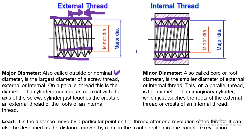There are other terms such as single thread, double thread, and multiple threads. For a single thread, one continuous thread has been cut. For a double thread, two threads have been cut simultaneously — it has two starting points — so you advance a larger distance for each revolution. We will define this further when discussing forms of screw threads.